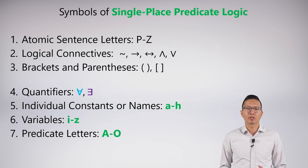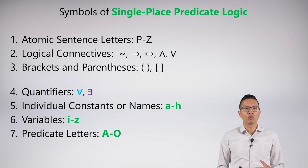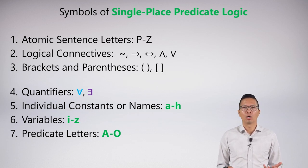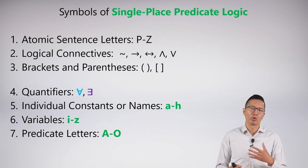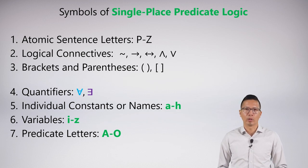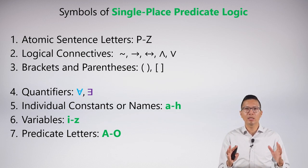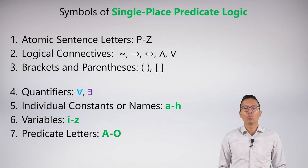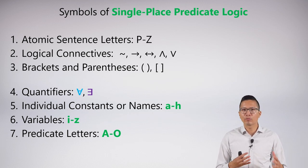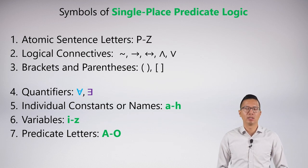We also have to have our predicate letters, capital A through O. The predicate letters are what allow us to bestow properties on our subjects, which are either names or some sort of variable. This is the basics of the symbols. What we need to do now is develop our syntax and vocabulary so we know how to build sentences in predicate logic.